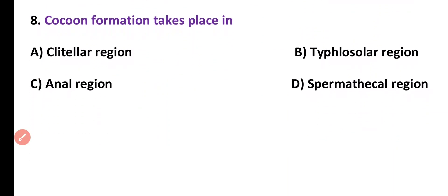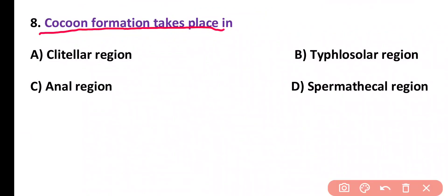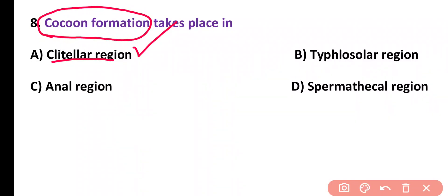Question number 8. Cocoon formation takes place in: clitellar region, typhlosolar region, anal region, or spermathecal region. Correct answer is option A. Clitellum is the structure in earthworm that is responsible for cocoon formation.